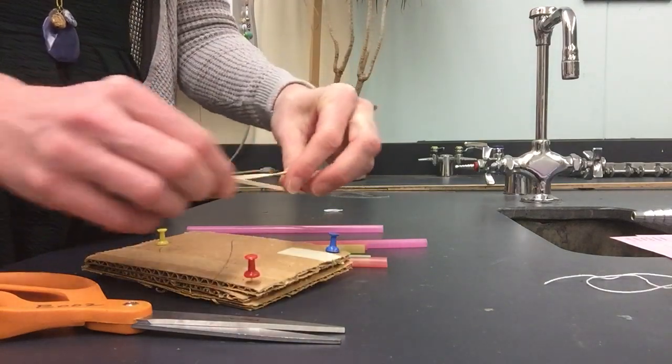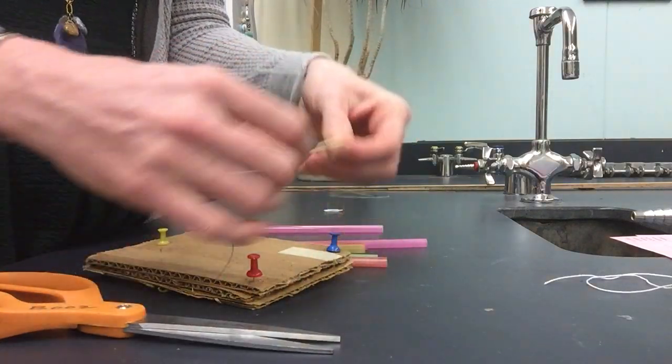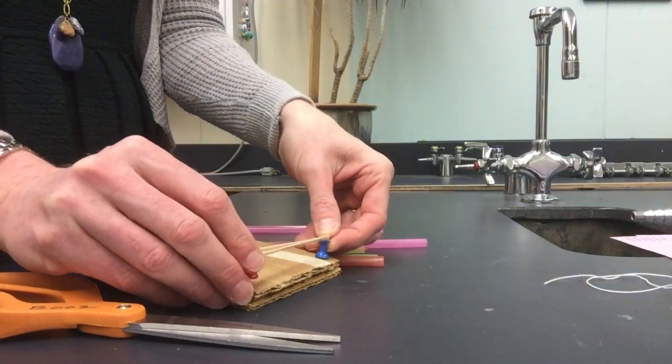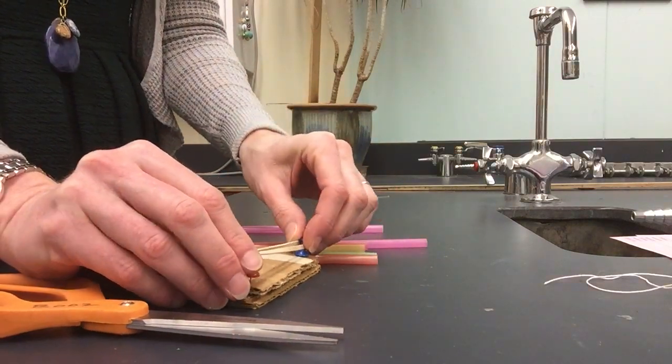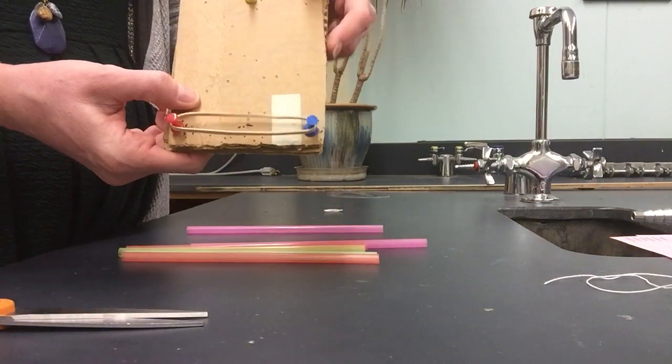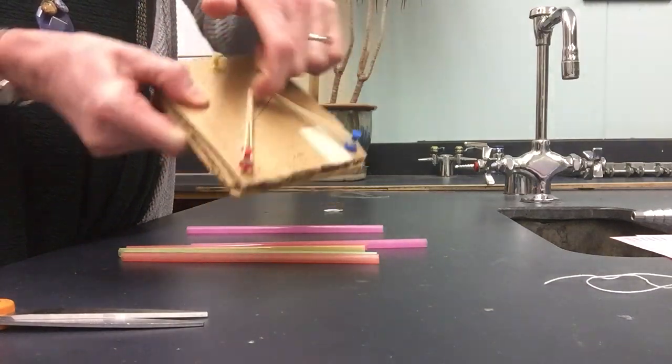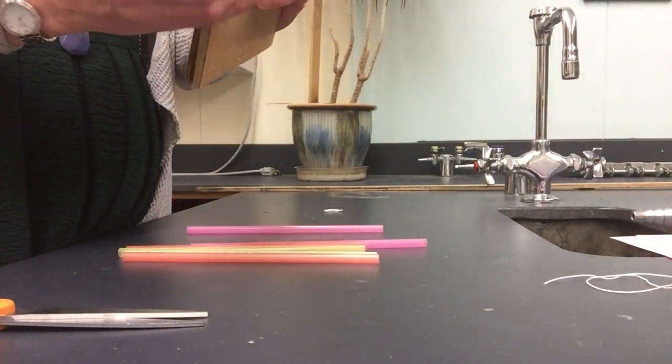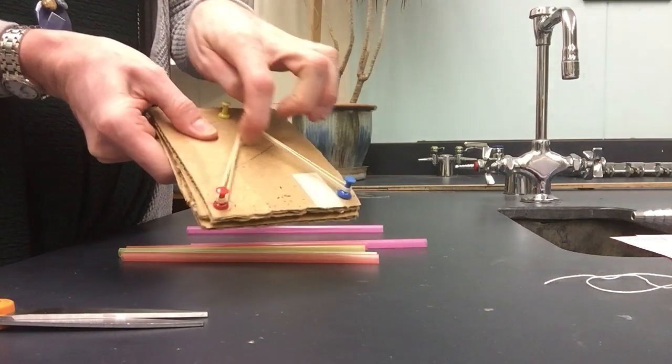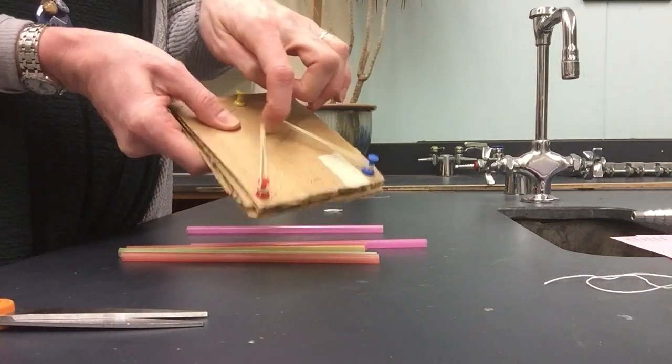Now you're going to want to wrap your rubber band around the end ones like that. Then it's going to be pulled back. Make sure your thumbtacks are in there nice and tight. It's going to be pulled back like this and launch your marble.